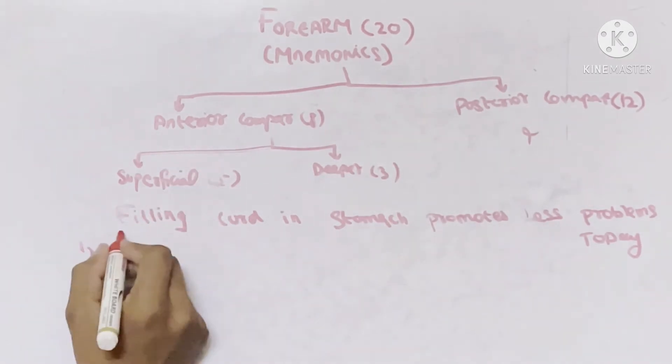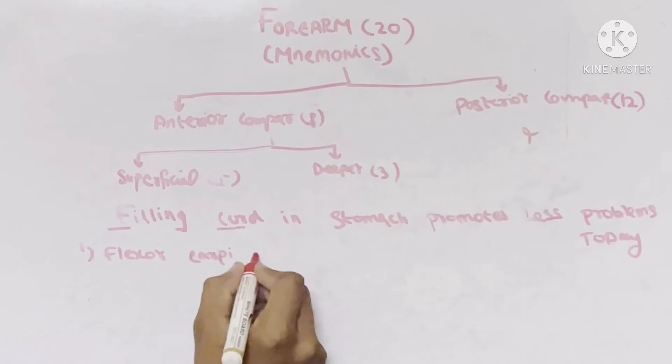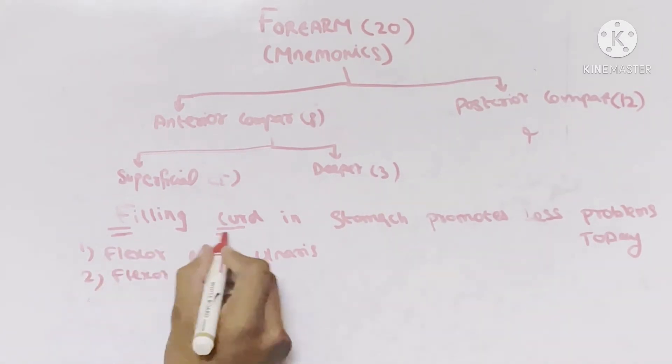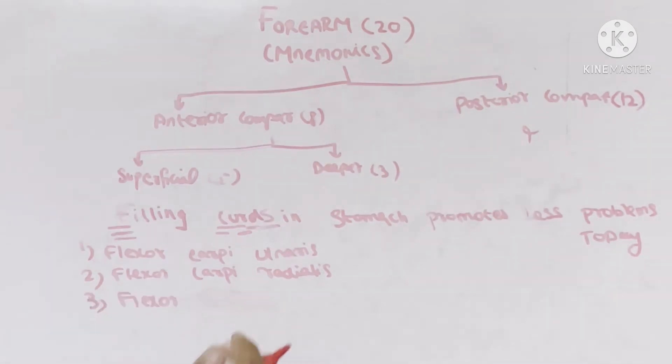Let us see what are these muscles. The first muscle is F for flexor, C for carpi, and U for ulnaris - the first muscle is flexor carpi ulnaris. Second muscle is again F flexor, C carpi, instead of U take R radialis. And the third muscle is again F flexor, here instead of U and R take DS where D stands for digitorum and S stands for superficialis.